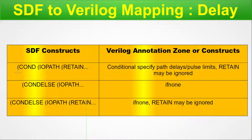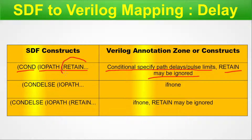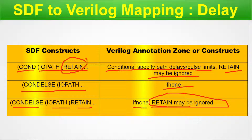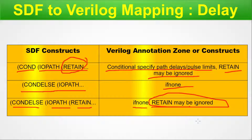Continuing the table: COND with IOPATH with RETAIN maps to conditional specify path delays and pulse limits, and RETAIN may be ignored. ELSE IOPATH and ELSE IOPATH with RETAIN also follow similar patterns where RETAIN may be ignored. You need to tally the SDF file and your Verilog design file side by side using these mappings; examples are provided for easier understanding.